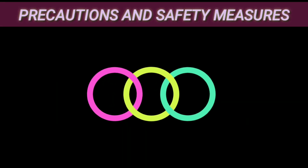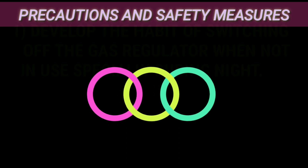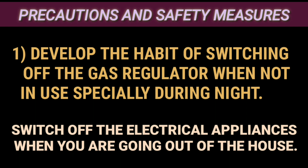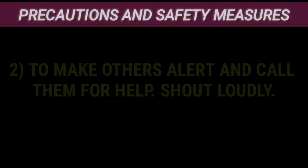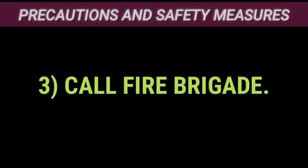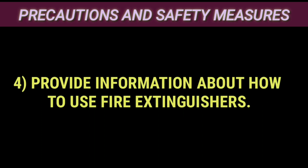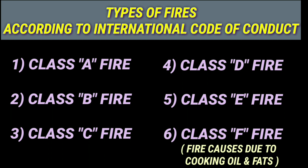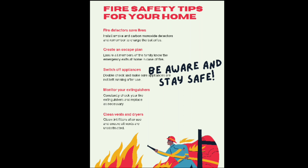Precautions and safety measures to be taken against fire. Number one: Develop the habit of switching off the gas regulator when not in use, especially during the night. Switch off electrical appliances when going out of the house. Number two: To make others alert and call them for help, you should shout loudly. Number three: Call the fire brigade. Number four: Provide information on how to use fire extinguishers. Thank you very much.